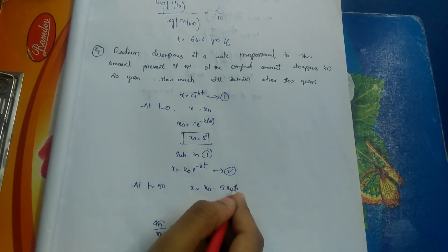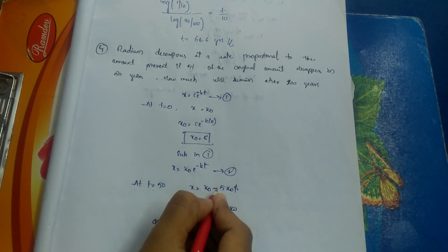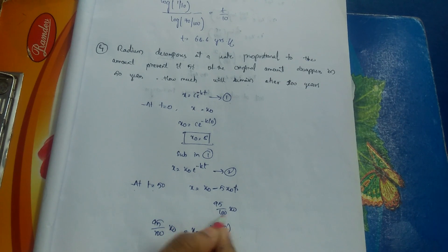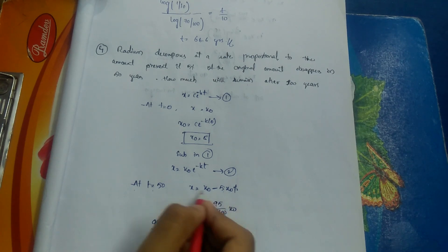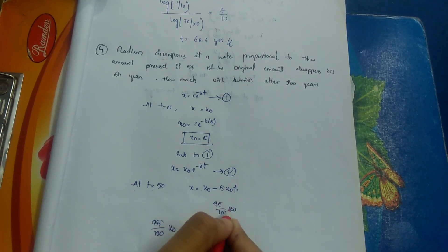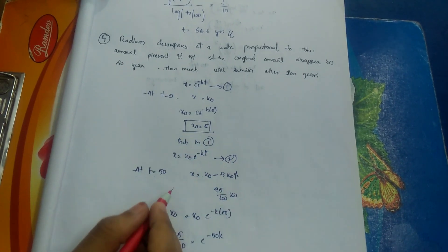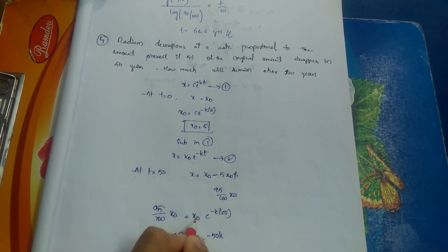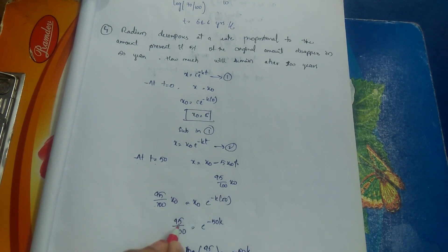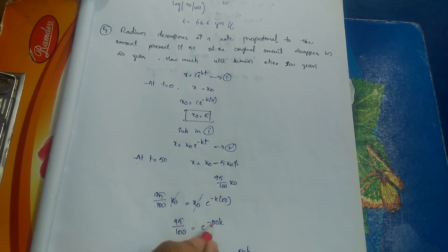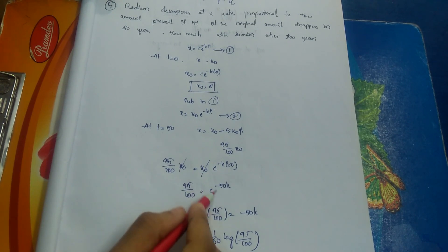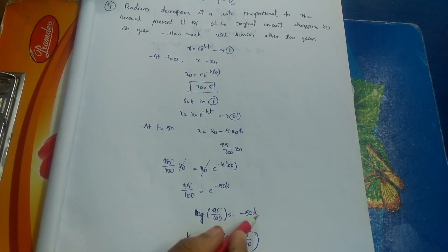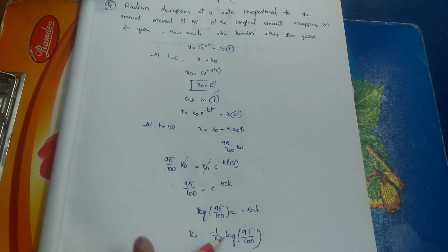At t = 50, 5% has disappeared, so x = x₀ − 5% of x₀ = 95x₀/100. Substituting into equation 2: 95x₀/100 = x₀ · e^(−50k). Cancelling x₀: 95/100 = e^(−50k). Taking logarithm: log(95/100) = −50k, so k = −(1/50)·log(95/100).